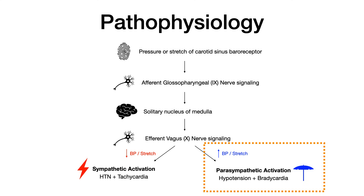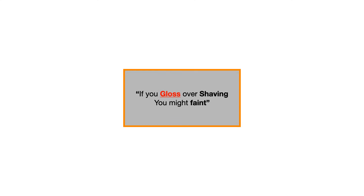For USMLE and COMLEX, it's really important to know that the glossopharyngeal nerve is your afferent signal — it's the signal that starts this cascade of events. The mnemonic I use is: if you gloss over shaving, you might faint. 'Gloss' reminds you of glossopharyngeal, and 'shaving' reminds you of applying that pressure at the hypersensitive carotid sinus. Glossopharyngeal is the afferent signal that activates the parasympathetic nervous system.